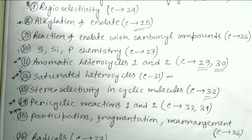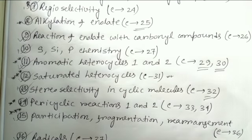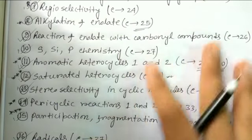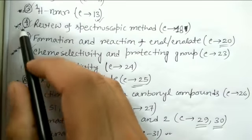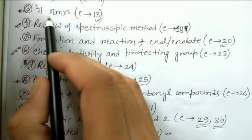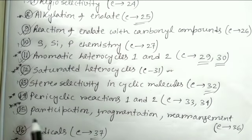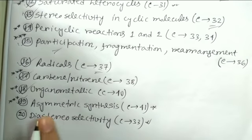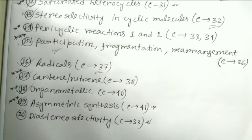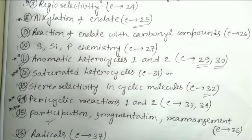These are the selected chapters you should at least read from Clayden. I'll again encourage you to read the whole book, but if you haven't read it before and exams are coming, at least try to read all these chapters. The special chapters to prioritize include: H1 NMR spectra, review of spectroscopic methods, chemoselectivity, alkylation of enolate, aromatic heterocycles, saturated heterocycles, pericyclic reactions (both chapters), participation/fragmentation/rearrangement, carbene/nitrene, organometallic, and asymmetric synthesis.